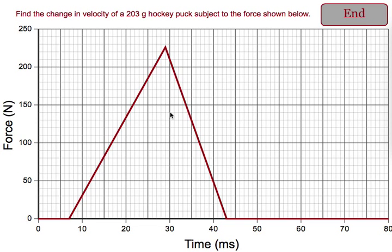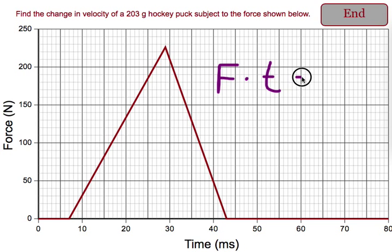In this problem we're trying to find the speed of a hockey puck subjected to a certain impulse. When you have a graph of force versus time, you find the area underneath the curve, and that will give you the impulse that was applied to the puck. You should realize that the impulse is also equal to the change in momentum of the puck.